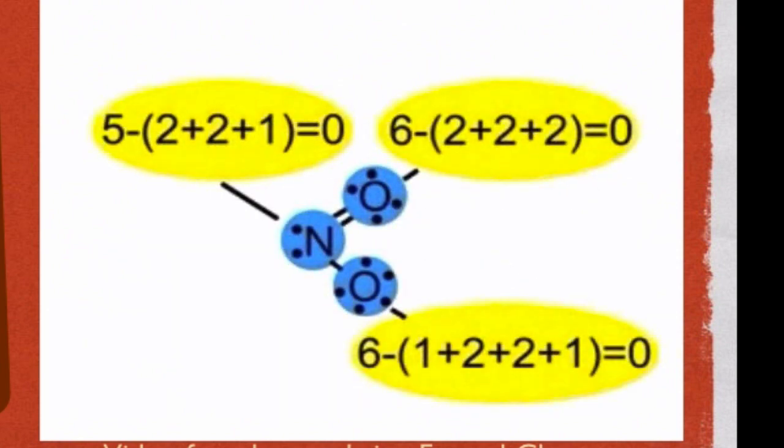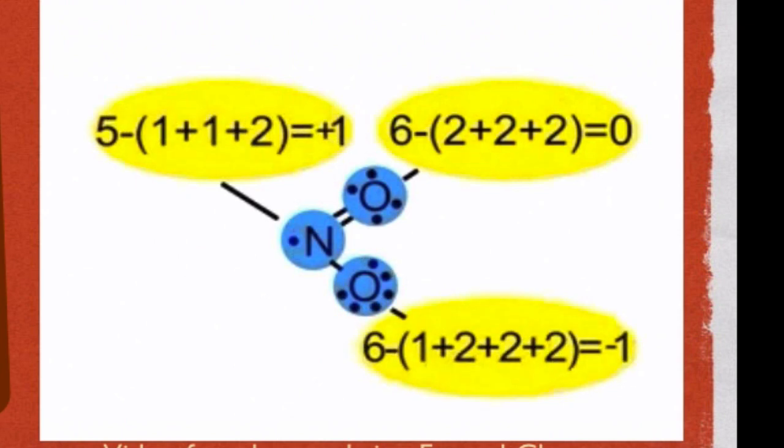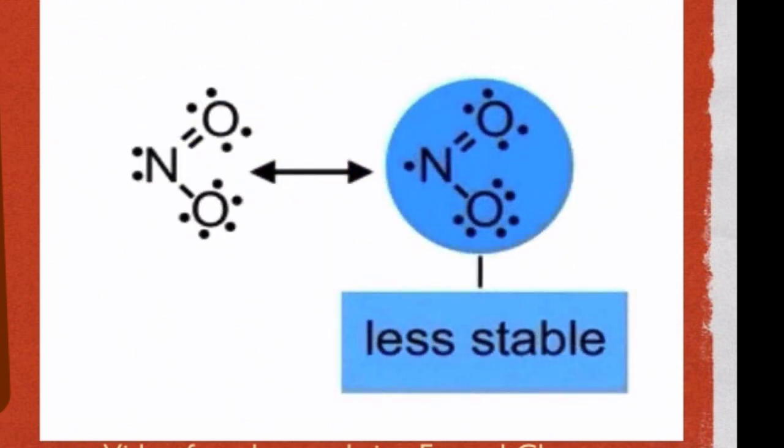In the first structure, the formal charges on all the atoms are zero. In the second structure, nitrogen bears a formal positive charge, and one of the oxygens bears a formal negative charge. Nitrogen is less electronegative than oxygen. Nevertheless, a formal positive charge on nitrogen and a formal negative charge on oxygen is an indication that this resonance structure contributes less to the ground state structure of NO2 than the previous one with the unpaired electron on oxygen.